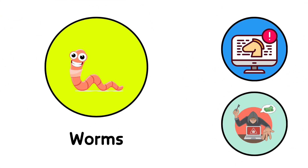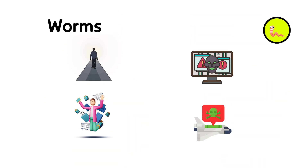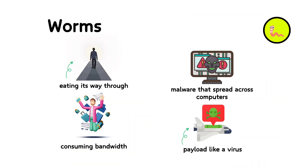22. Worms. Imagine a worm in an apple, eating its way through and making holes to move from one apple to another. Computer worms are similar — they are a type of malware that spread across computers, copying themselves from one system to another, often over a network, without needing any interaction from a user. They can cause a lot of damage by consuming bandwidth or possibly delivering a payload like a virus.